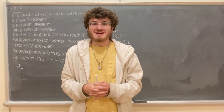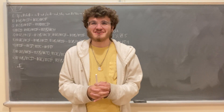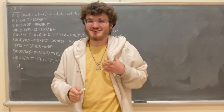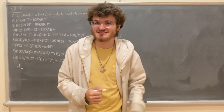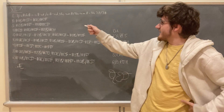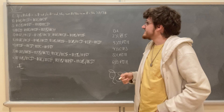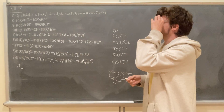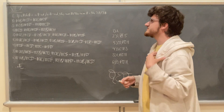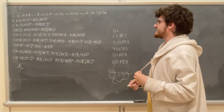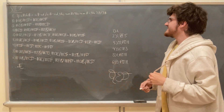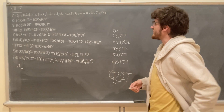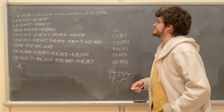Hello, this will be a demonstration of Proposition 7 from Book 7 of Euclid's Elements, which says that if a number is the same part of a number that a number subtracted is of a number subtracted, then the remaining number will be the same part of the remaining number that the whole number is of the whole number.